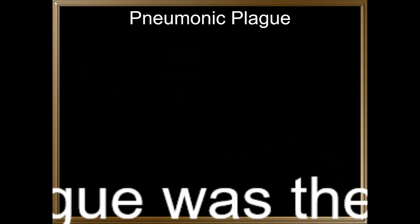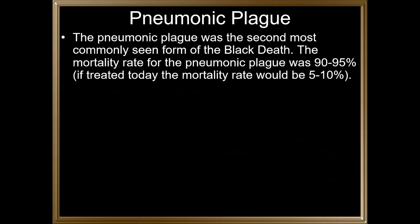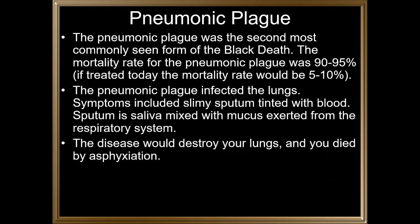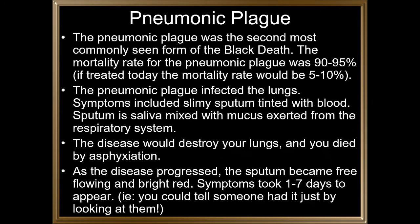The pneumonic plague was the second most commonly seen form of the Black Death, with a mortality rate of 90 to 95%. If treated today, the mortality rate would be 5 to 10%. It infected the lungs, and symptoms included slimy sputum tinted with blood — sputum being saliva mixed with mucus from the respiratory system. The disease would destroy your lungs, and you died of asphyxiation. As the disease progressed, the sputum became free-flowing and bright red. Symptoms again took one to seven days to appear.